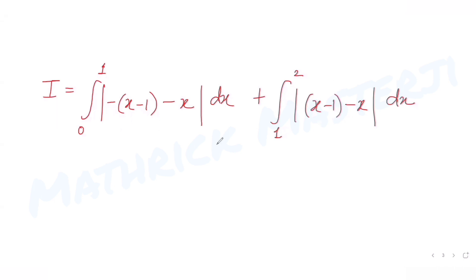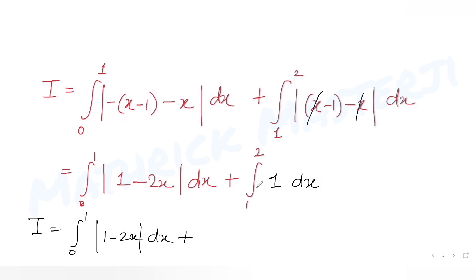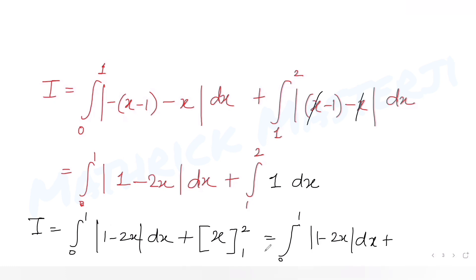Now simplifying: from 0 to 1, the expression inside the outer mod becomes minus x minus (minus of x minus 1) = minus x minus x plus 1 = 1 minus 2x. From 1 to 2, x and minus x cancel out, leaving mod of minus 1, which equals 1. So applying limits on the second part gives 2 minus 1 = 1. We now need to evaluate the integral of mod of (1 minus 2x) from 0 to 1, plus 1.